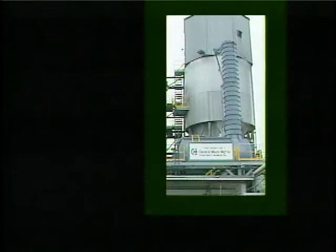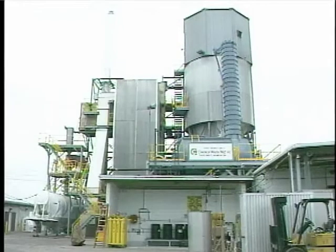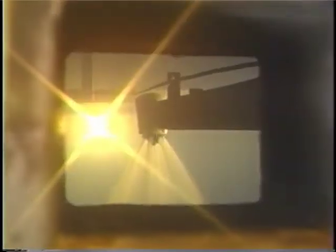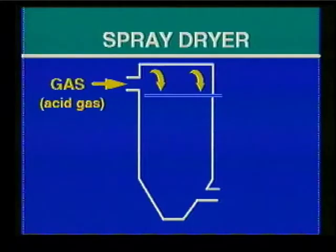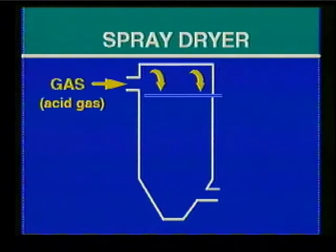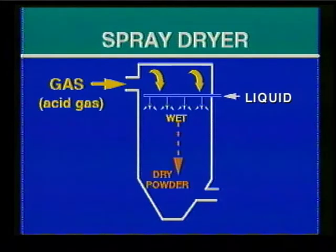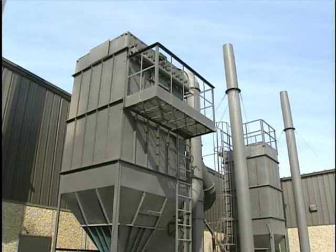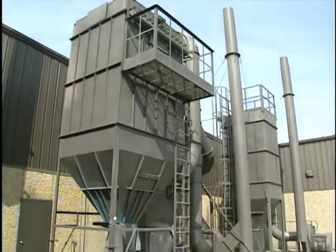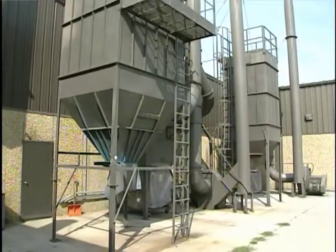Spray dryer absorbers are used to remove acid gases such as SO2 and HCl from a gas stream. An alkaline solution or slurry is sprayed into the top of a large vessel through pneumatic or rotary atomizing nozzles. The gas stream enters at the top and is in contact with the droplets for 6 to 20 seconds. During this time, the acid gases are absorbed by the droplets and react with the alkali while the heat of the gas stream dries the reaction products. The dry products along with any particles in the gas stream are collected in a fabric filter or electrostatic precipitator.